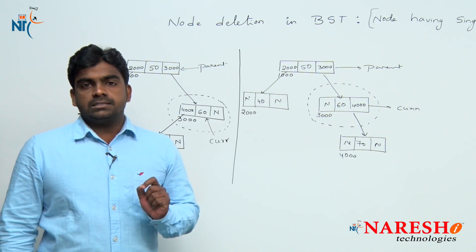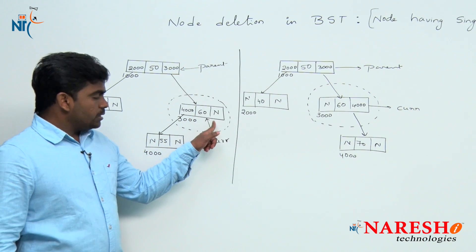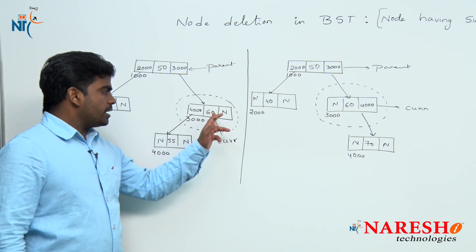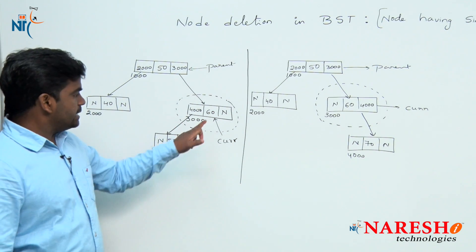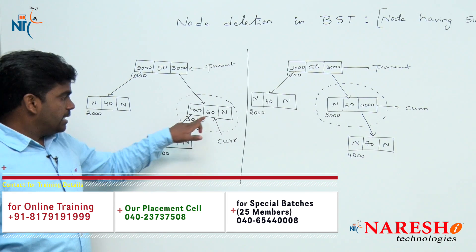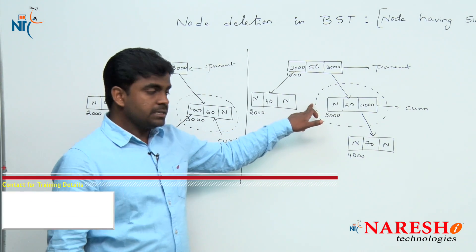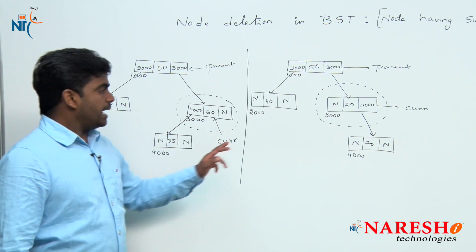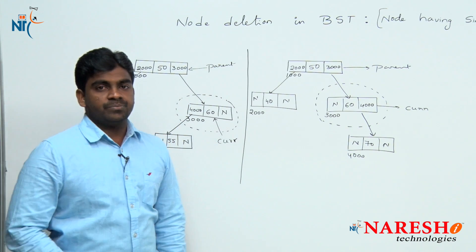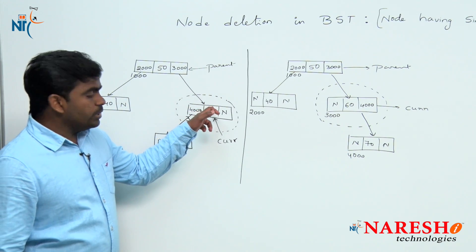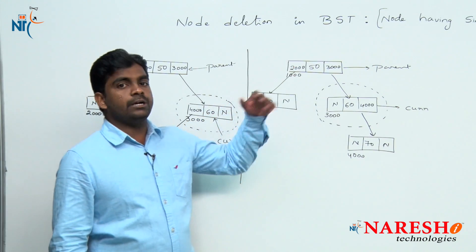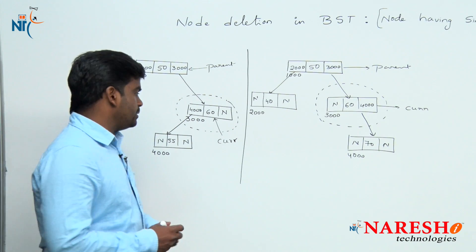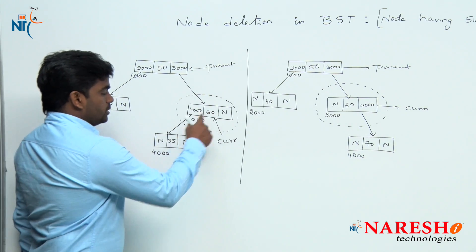What are the 4 chances? First you have to analyze: suppose this node is having one child - child is a left child or right child you have to consider. Here child is a left child, here child is a right child, here child is a left child, and child is a right child. That is one case. Next one: the current node is connected to parent to right or parent to left. Now, parent to right is very very important.